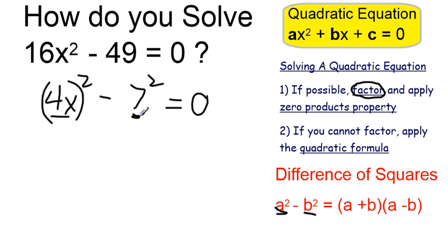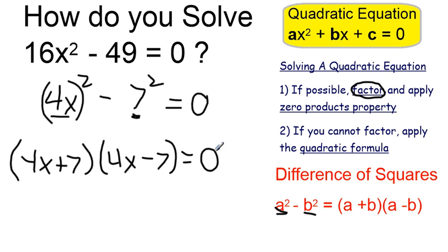So because it falls into that pattern, I can rewrite it as (4x + 7)(4x - 7) = 0. Now that it's factored, I can apply my zero products property, which tells me that either this must equal zero or this binomial is going to equal zero.